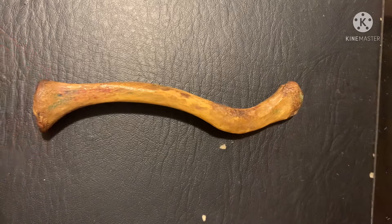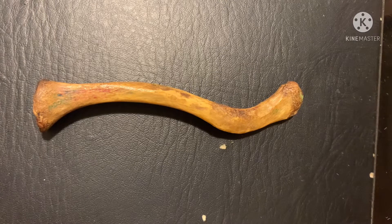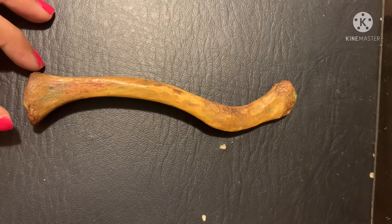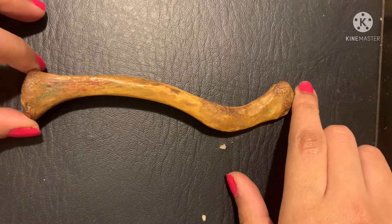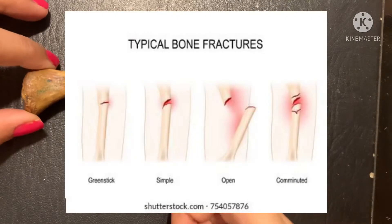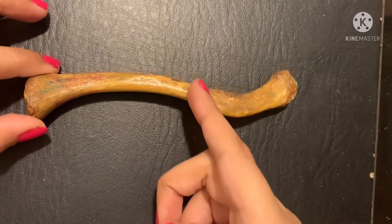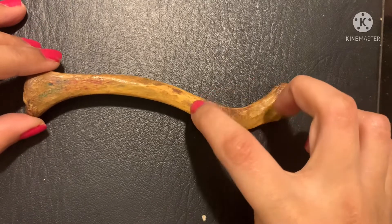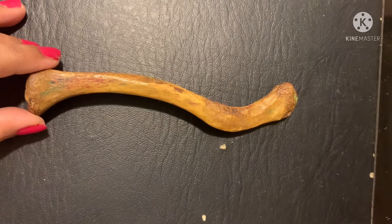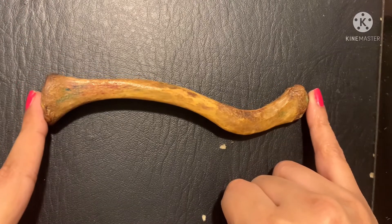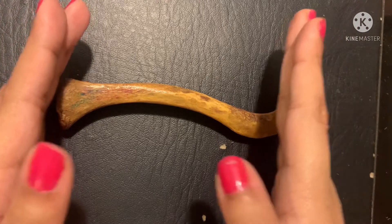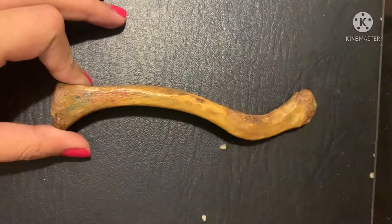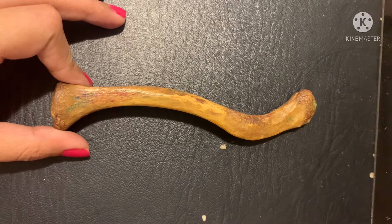Another type of fracture occurs in neonates and children younger than 10 years, known as the greenstick fracture of the clavicle. Greenstick fracture is an incomplete fracture — a crack forms in the bone but the bone remains connected on one side without displacement. In neonates, this can occur during normal vaginal delivery when a neonate with broad shoulders experiences a crushing force as the shoulders are compressed through the birth canal.